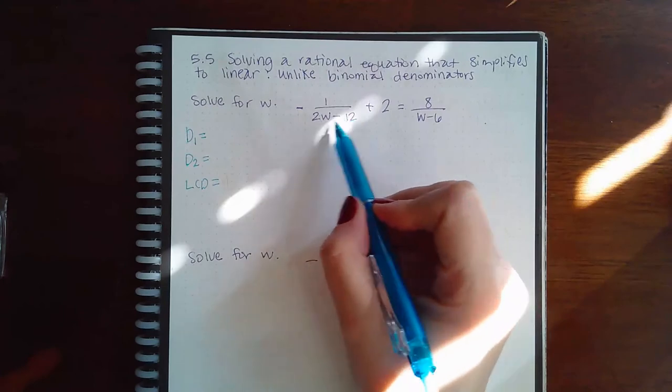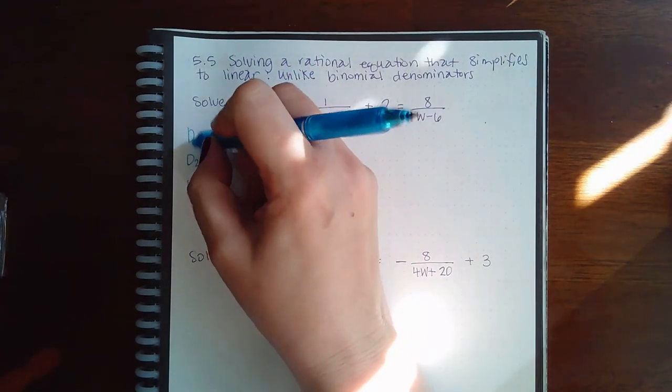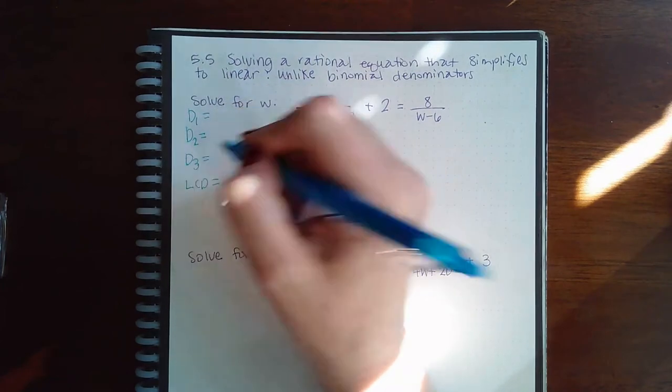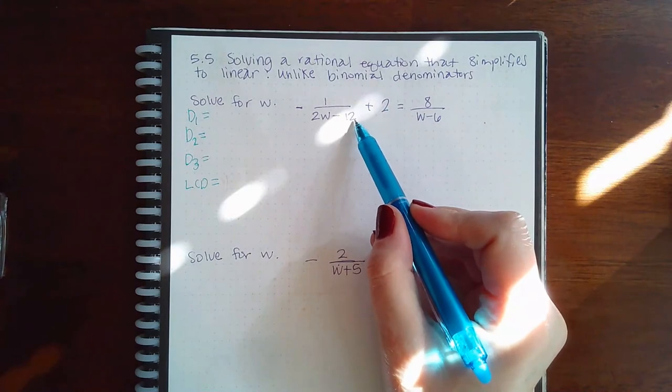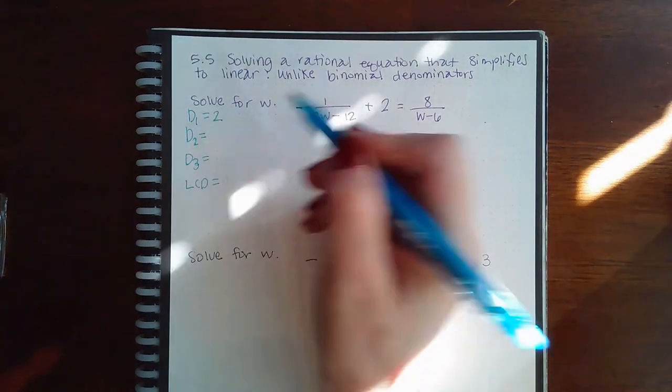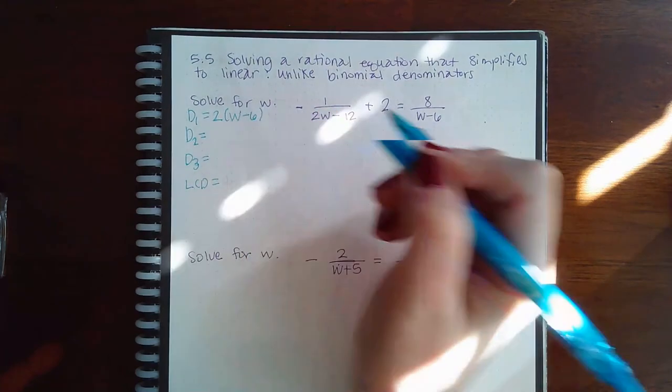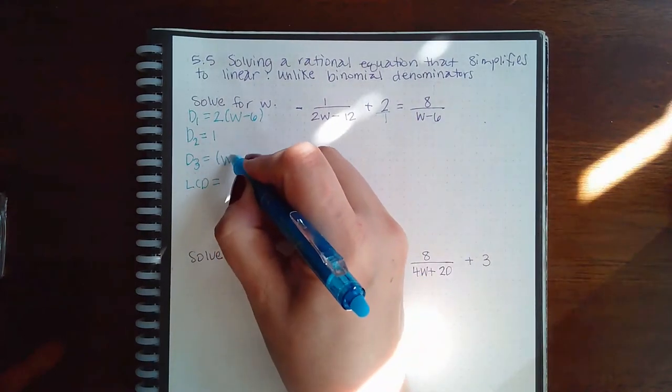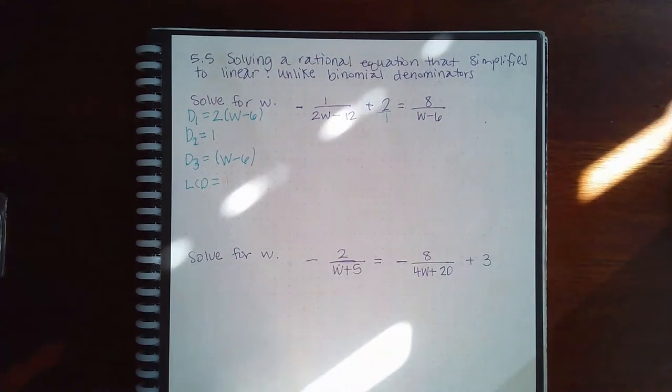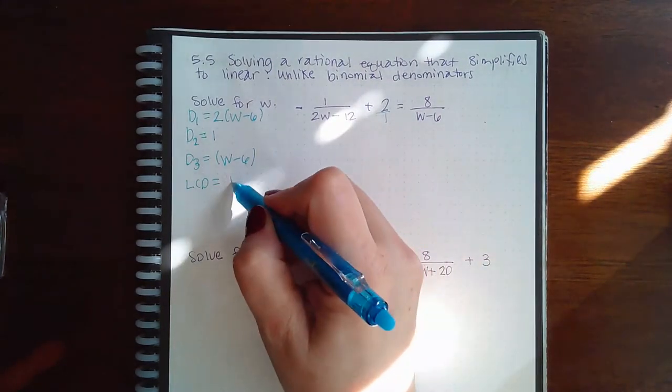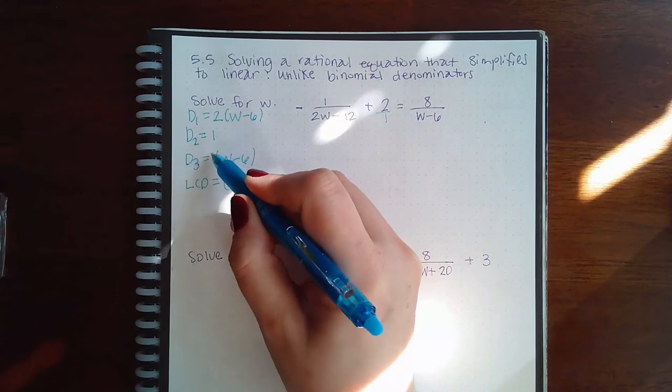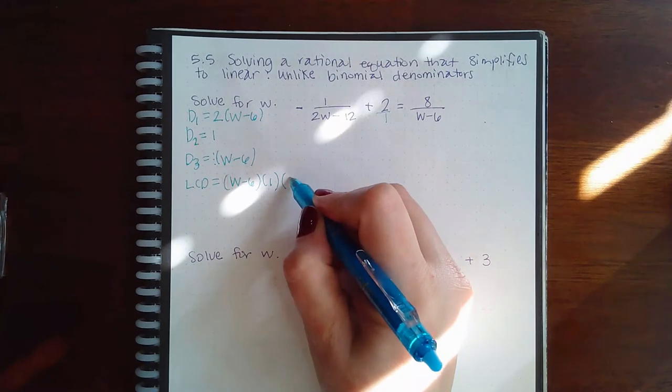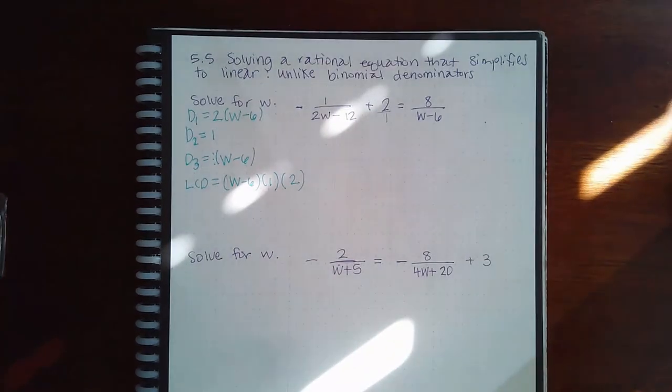This denominator is not in factored form. So if I want to put this first denominator in its factored form, I do have to factor out the GCF of 2 and I end up with W minus 6. This denominator is just a 1 and this denominator is already just the W minus 6. So what do they have in common? These two have a W minus 6 in common. These two have the 1 in common and then this one has the distinct factor of a 2, which neither of the other two denominators have.